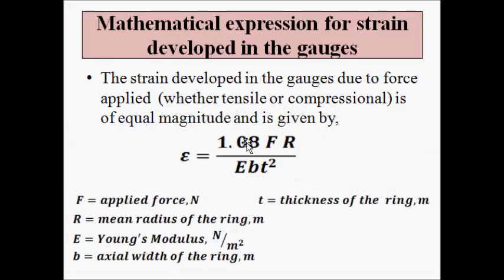The interesting thing about the mathematical expression for the strain induced in the four strain gauges is that whether the strain is tensile or compressional, the magnitude of both strains are equal. The expression is: ε = 1.08 × F × R / (E × b × t²), where F is the applied force in newtons, R is the mean radius of the ring, E is Young's modulus of elasticity, b is the axial width of the ring, and t is the thickness of the ring.